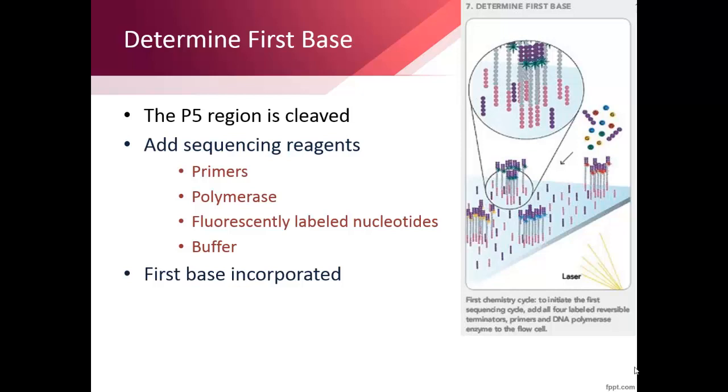The reagents needed to sequence are added, such as primers to start the sequencing, fluorescently labeled nucleotides to form and detect the base added to each cluster, polymerase to actually add the nucleotides to the forming strand, and buffer to keep the pH at an optimum level for enzymatic reaction.